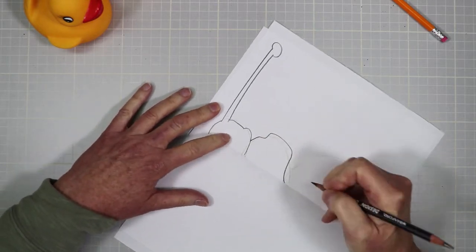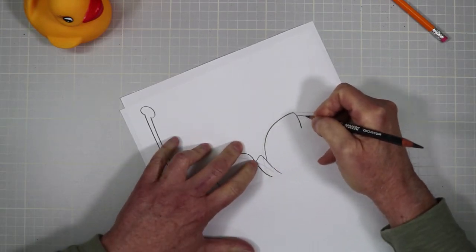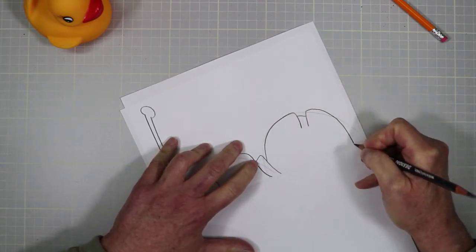Here is the thorax. I'm going to shape it differently, and here is the abdomen. Remember, it's just half of the bug right now.